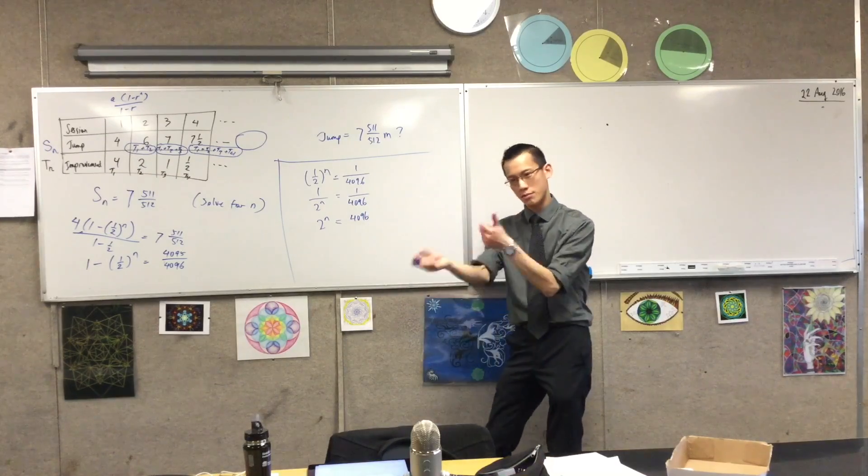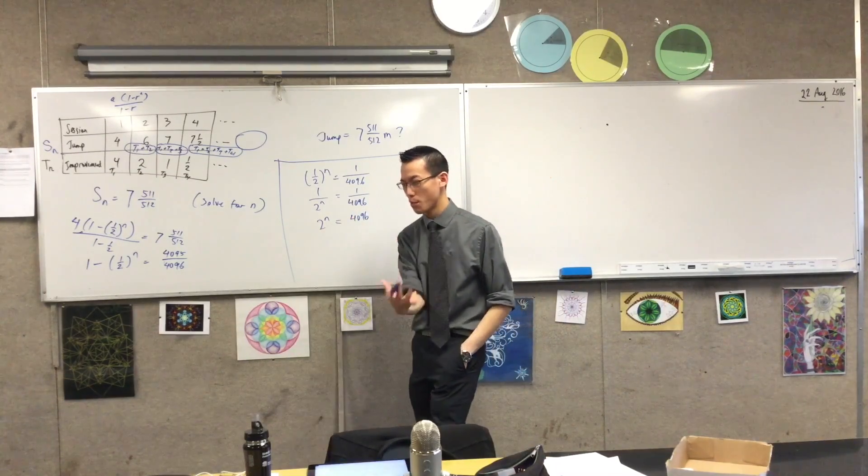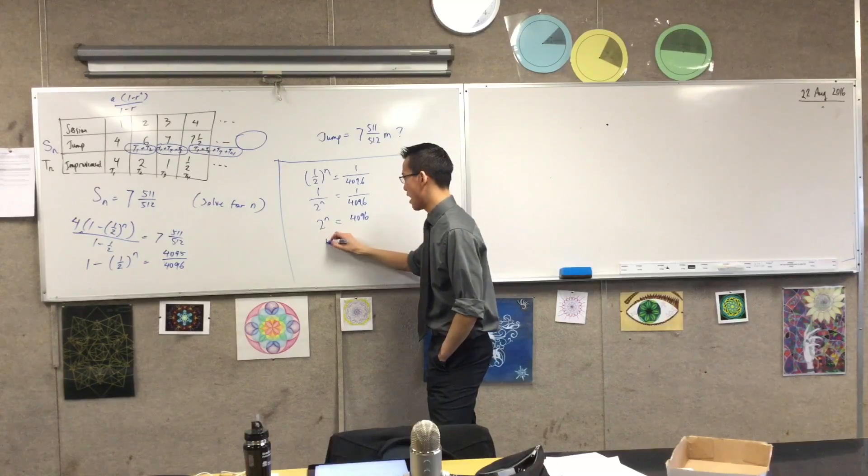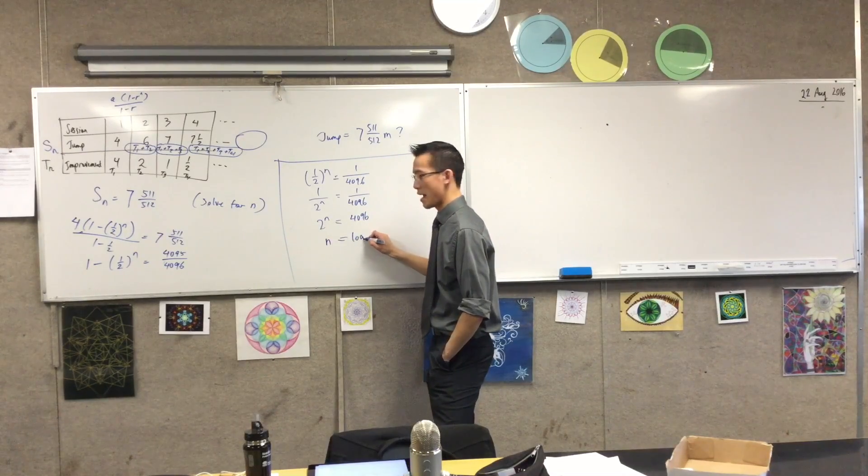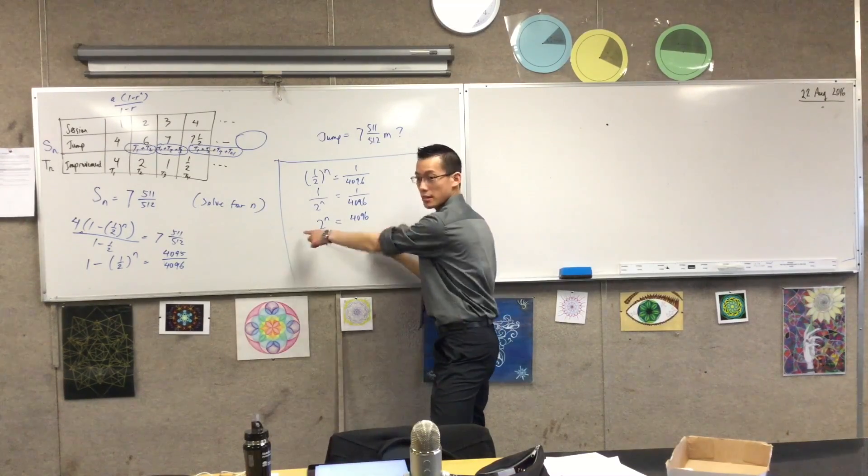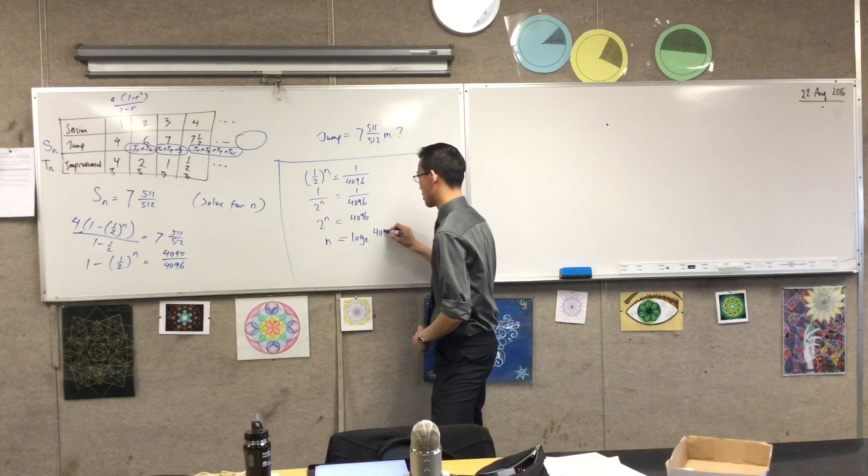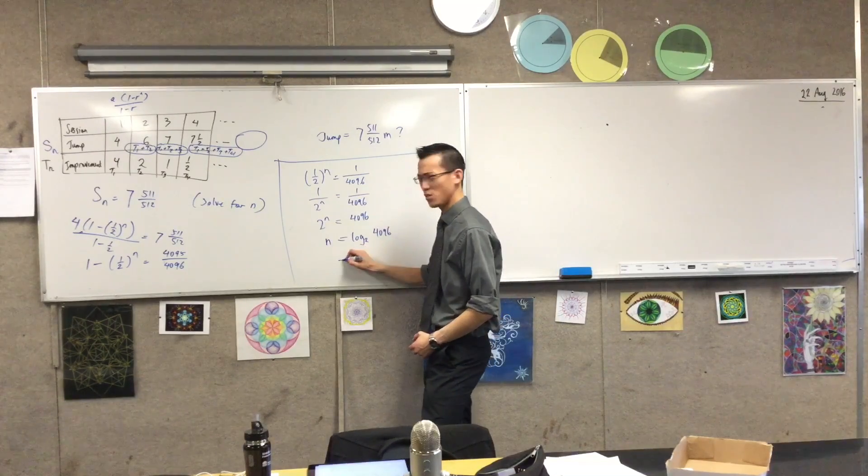So that tells me this. So now, I mean, I could just do this on my calculator. But if I wanted to do it properly, I would say N is log base 2 of 4,096. Which I think gives you 12 or something.